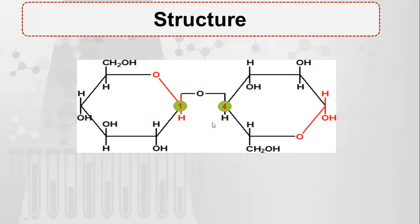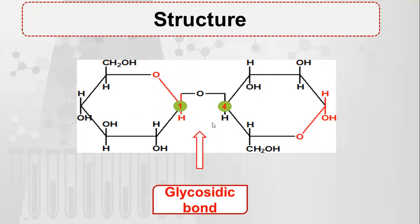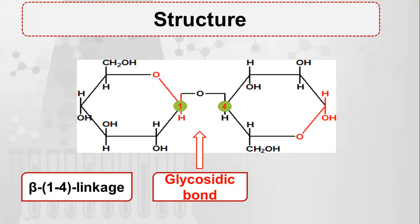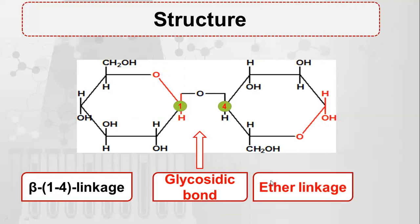This is a beta-1-4 linkage. The glycosidic bond formed is between carbon 1 and carbon 4, and since this is beta-D-glucose, we call it a beta-1-4 linkage; it is also an ether linkage. Now a glycosidic bond has formed, giving us a disaccharide. Carbon number 1 and carbon number 4 are still free, meaning a long chain can be formed by adding beta-D-glucose molecules at both ends.